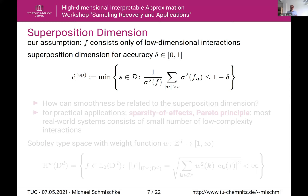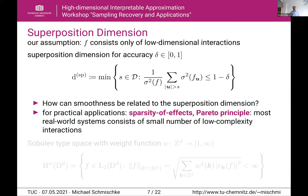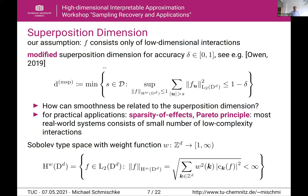We can ask how smoothness relates to the superposition dimension. We can argue with the sparsity of effects, or the Pareto principle — most real-world systems consist of a small number of low-complexity interactions. To relate smoothness to the superposition dimension, we introduce the Sobolev-type space with a weight function w, collecting all the L2 functions such that this weighted sum is still finite. Using this Sobolev-type space, we get a modified superposition dimension for accuracy delta, where we replace the variance of the function with a supremum over the unit ball in our Sobolev-type space.